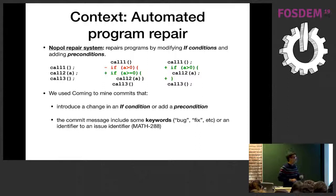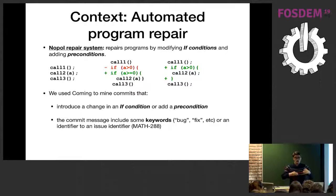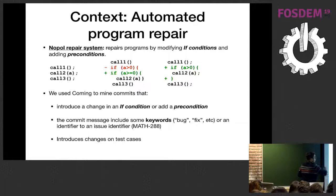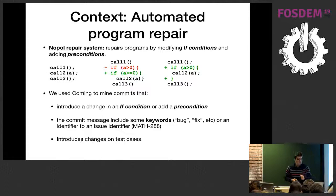We also wanted the commit message to include some keywords — for instance, a link to a bug report. And we wanted to get those commits that introduce the if-condition change (the patch or the precondition), that change the message, and also introduce a change in the test cases. This was because we wanted to know whether the test cases were updated when the patch was introduced.